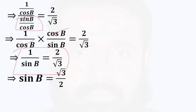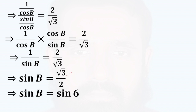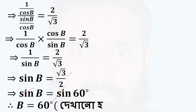This is the case of sin b equal to root 3 by 2. I know that root 3 by 2 is sin 60°. So root 3 by 2 means sin b equal to sin 60°. So b is equal to 60°.